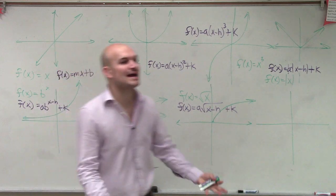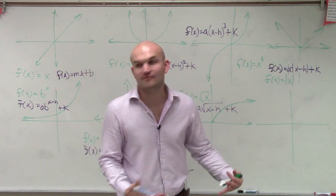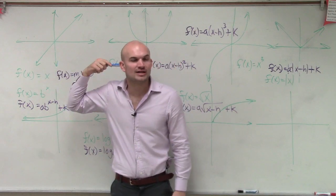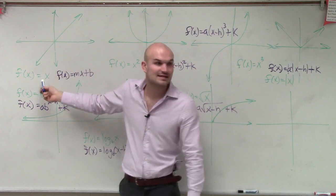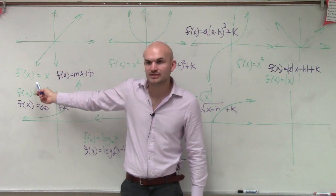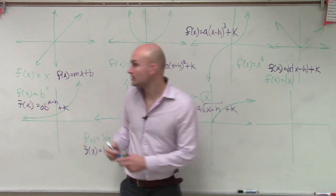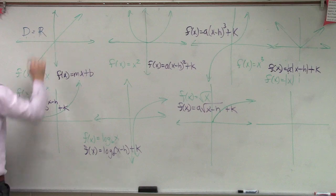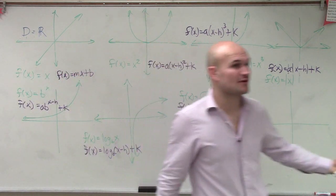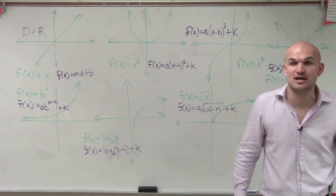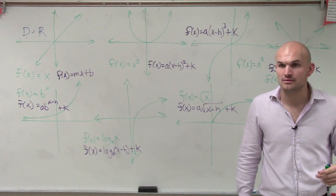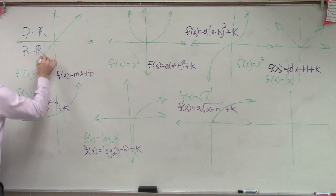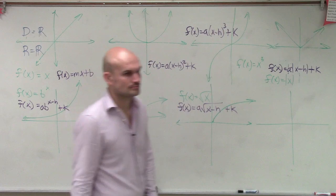For the first function, remember, domain is the set of all input values that are going to be part of your function. So I look at this function and I say, is there any restriction on the number I can plug in for x to get an output? Can I plug in any number into this equation? Yeah. Any number. So my domain is going to be all real numbers. How about the range? If I plug in any number for x, can I get any number out for y? Is there any restriction on what number I can get out of my function? No. So my range is also going to be all real numbers.